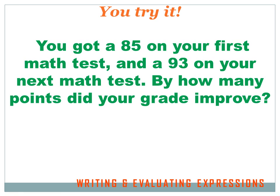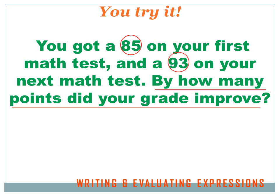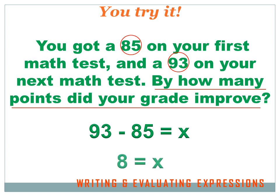You got an 85 on your first math test and a 93 on your next math test. By how many points did your grade improve? Let's CUCC it: circle 85 and 93, and the question is 'by how many points did my grade improve?' — that's the variable X. We translate: 93 minus 85 equals X. 93 minus 85 is 8, so 8 equals X. Your grade improved by 8 points.